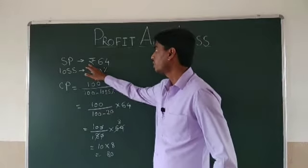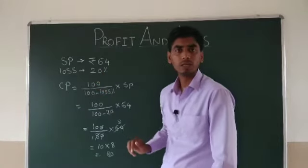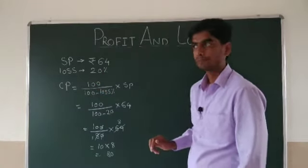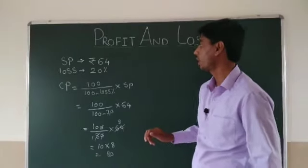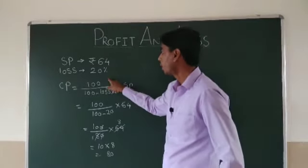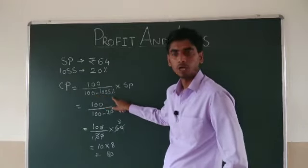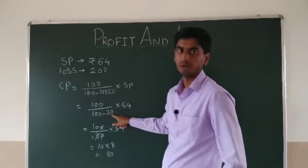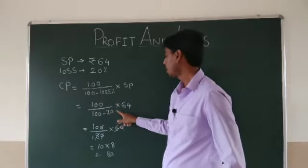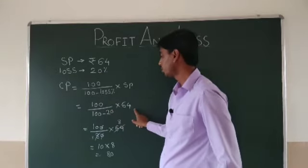Selling price is given and loss is given. The formula of cost price is 100 over (100 minus loss%) into selling price. 20% loss is given, so we subtracted it from 100 and multiplied by 64, giving 100 over 80 into 64, which equals Rs 80.